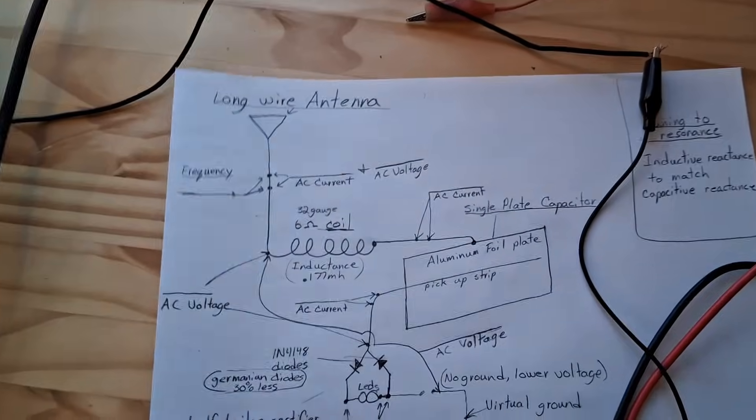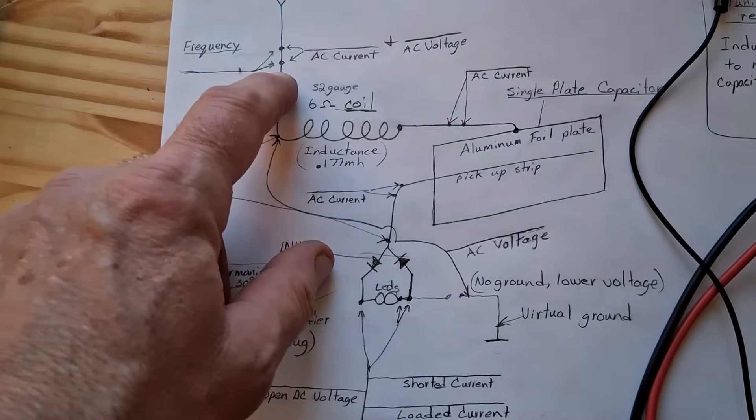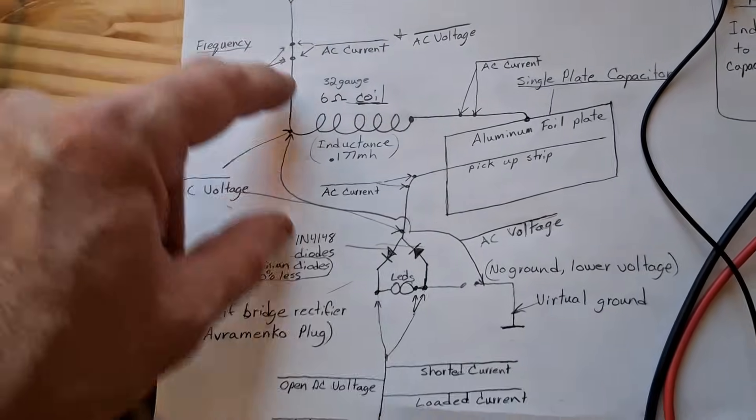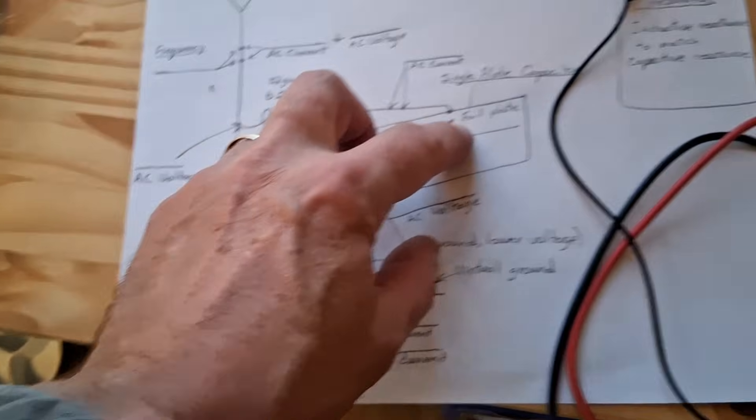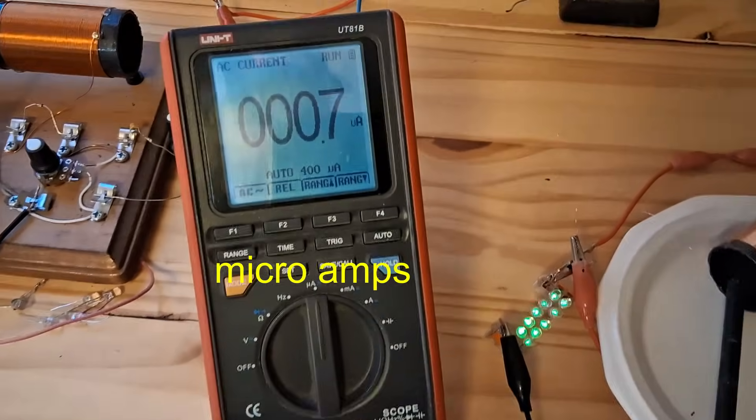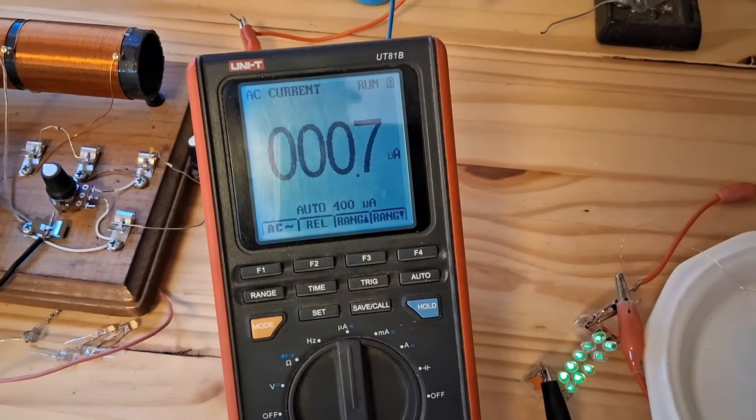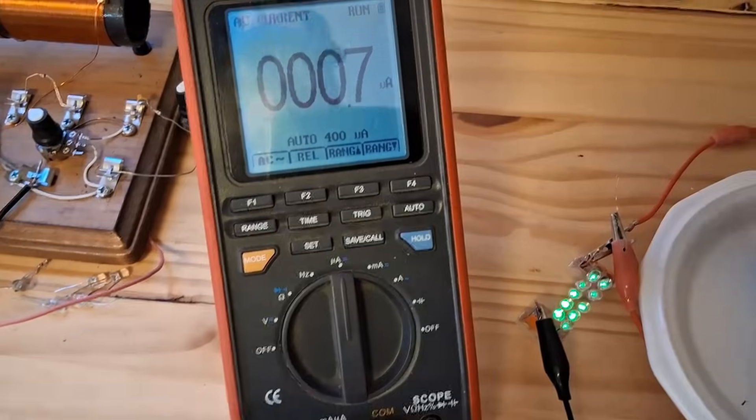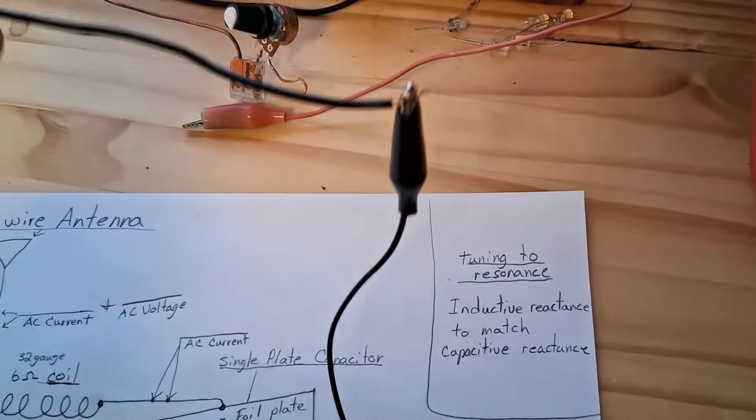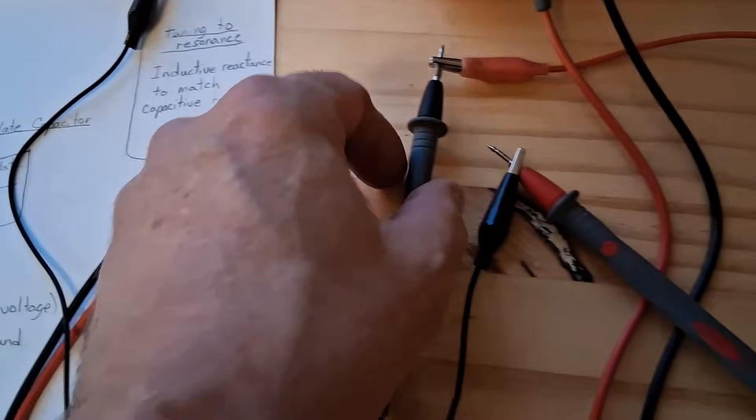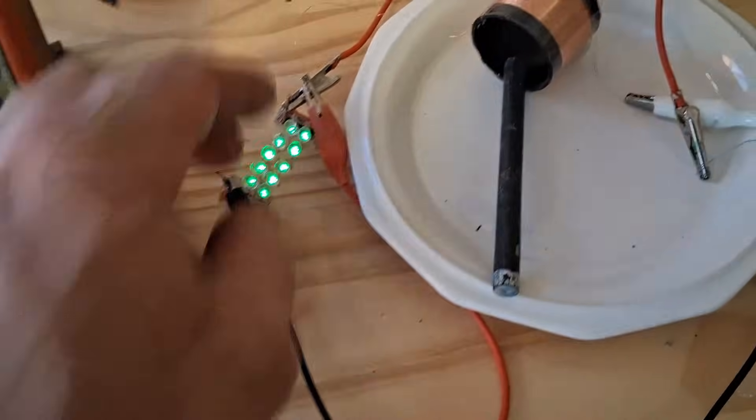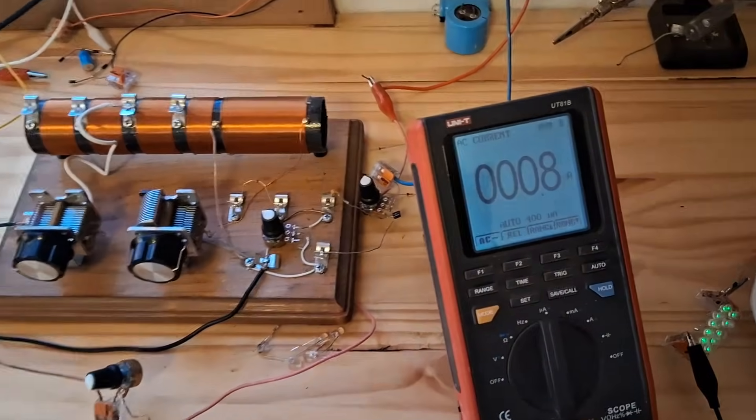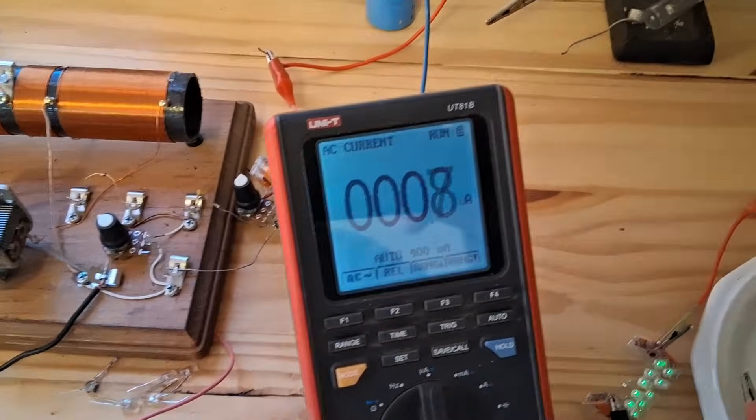The first thing that I'm going to do is check the AC current frequency and voltage between the antenna and the circuit. I have it set up on AC amps right now. 0.7 microamps is what we're getting, 0.8 jumped up to 0.8. And that was the current.